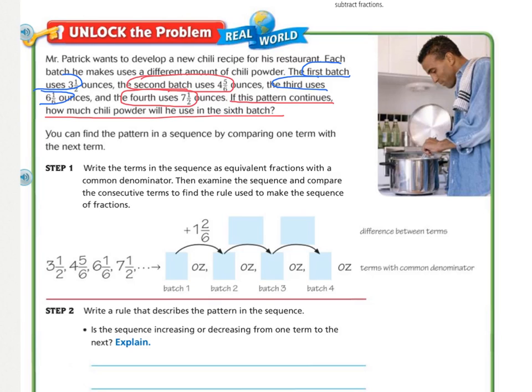You should have underlined, if this pattern continues, how much chili powder will he use in the sixth batch? And I'm actually going to double underline 6 so that we know how far we need to go. And then I circled the first with 3 1/2, second, 4 and 5/6, third, 6 and 1/6, fourth, and 7 1/2. Now, I circled the first, second, third, fourth, so that I made sure that I kept my numbers in order.